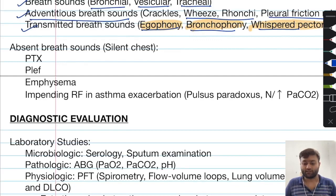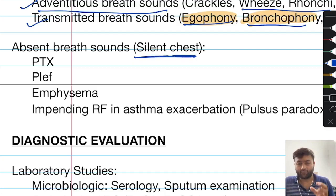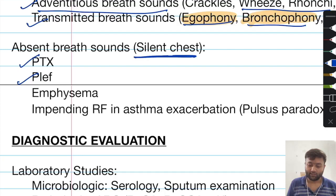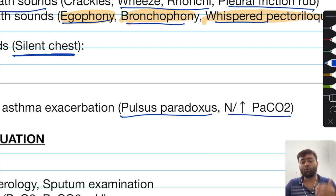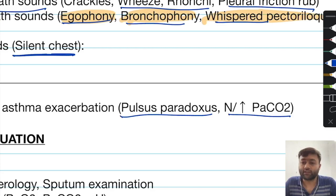You should know the importance of absent breath sounds, referred to as a silent chest. In silent chest, four important causes are: pneumothorax, pleural effusion, emphysema, and any impending respiratory failure in an asthma exacerbation. This should be considered in concert with the presence of pulsus paradoxus and a normal to increasing value of PaCO2. An asthma patient normally will hyperventilate, leading to a fall in PaCO2, but if the value returns to normal or increases, you should consider that the patient is going into respiratory failure.